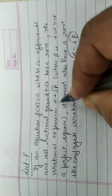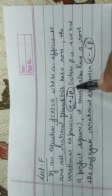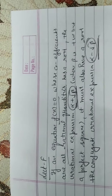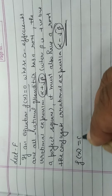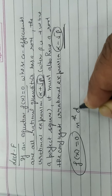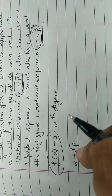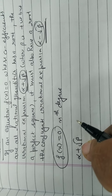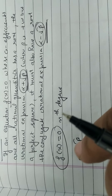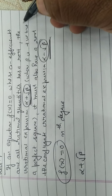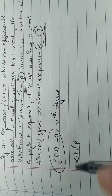कहने का मतलब ये है - यदि किसी equation में जिसके coefficient rational हैं, उसका इस तरह का root पाया जाता है, तो conjugate root भी पाया जाएगा। How we can prove this? f(x) एक nth degree polynomial equation लेते हैं, और मान के चलते हैं कि इसका एक root α + √β है, where β is positive, rational, and not a perfect square.